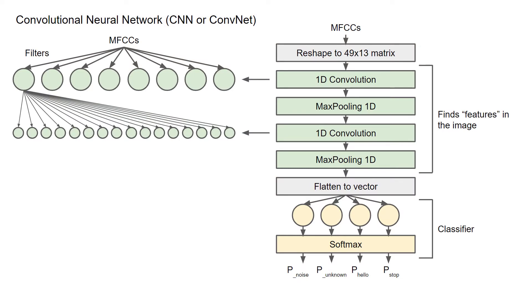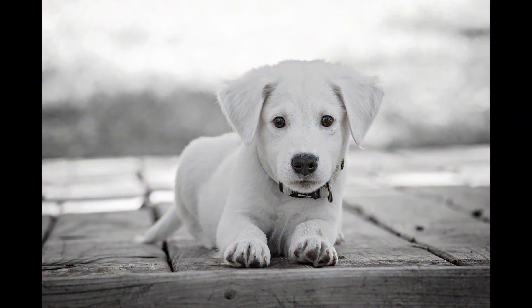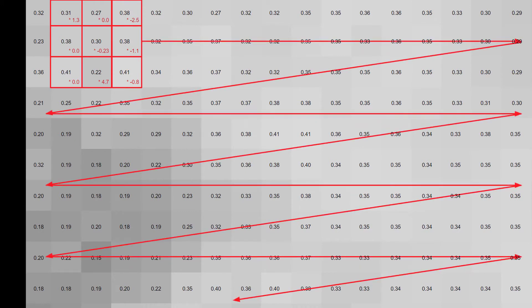Let's see how these filters work using our puppy photo, made grayscale for simplicity. Zooming in on a portion, each pixel is just a number — in machine learning settings, these are typically normalized to floating point values between zero and one. A filter, also known as a kernel, is a matrix with parameters that multiply the pixel values. These products are summed together to form a new pixel in the filtered image — this is the dot product. The filter then slides over and performs the same operation on the next set of pixels, continuing for the entire image to create a new filtered image.